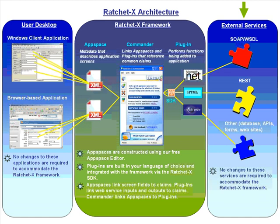The panel to the right is called External Services. Although we use the term services, in reality this panel represents all the web services, websites, APIs, databases and forms you might want to integrate into your desktop applications.